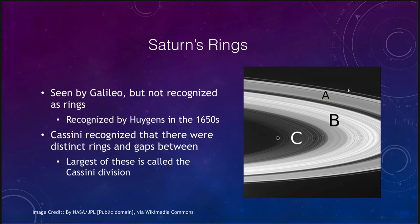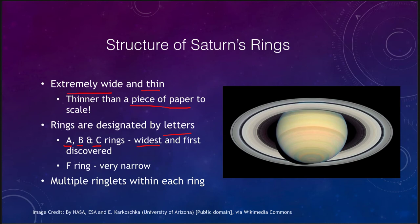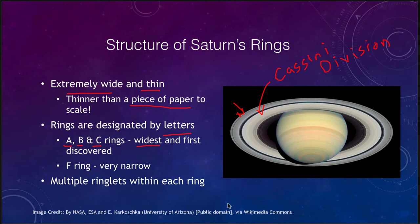When we look at the structures of these rings, we see that they are extremely wide and thin — in fact, thinner than a piece of paper if you took them to scale. We designate the rings by letters. The primary ones are the A, B, and C rings, the first three to be discovered — the primary widest rings. You also have the Cassini division, the gap in between those rings. There are other gaps and structures within the rings as well. The rings are not just a single ring, but actually have multiple ringlets within each ring.